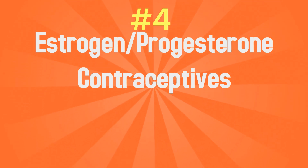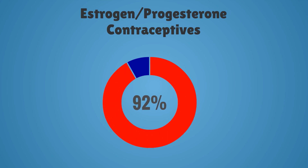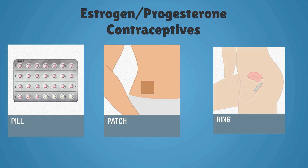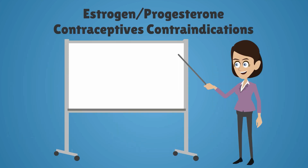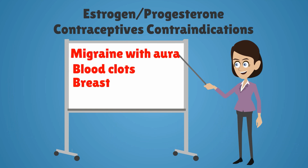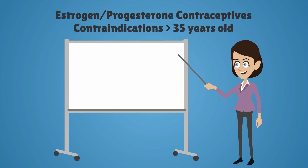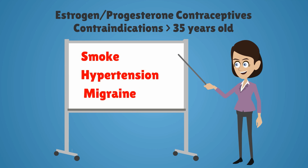Number four: estrogen-progesterone contraceptives. These methods are 92% effective at preventing pregnancy and include the oral contraception pills, the patch, and the vaginal ring. All of these require daily, weekly, or monthly action from the patient. Contraindications to estrogen-containing contraception include migraine with aura, history of blood clots, personal history of breast cancer, or liver disease. For women over age 35, this list is expanded to include women who smoke, have hypertension, or have migraines.